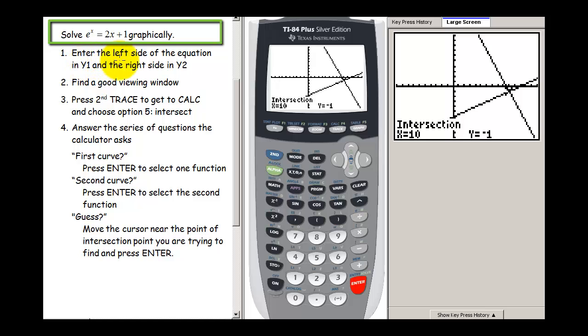In order to solve this equation, what we're going to do is we're going to enter the left side of the equation into y1. So that means I'm going to enter this function in for my y1 and the right side, that's this 2x plus 1, in for my y2.